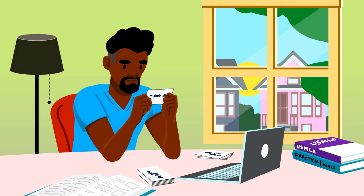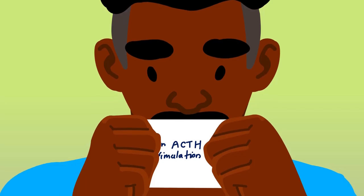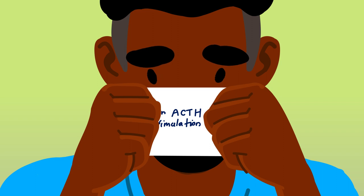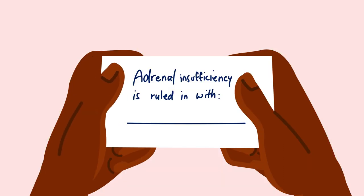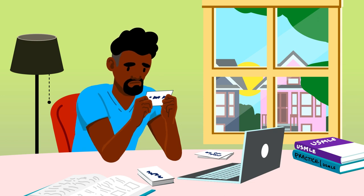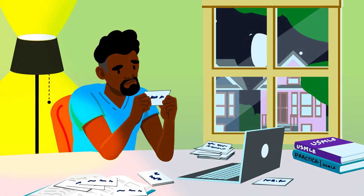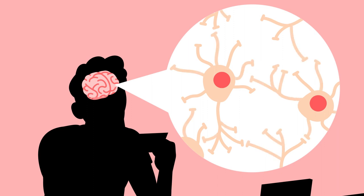You are studying for your board exams and have created flashcards to help. On one side, you have a prompt. On the flip side, the answer. You test your knowledge. Adrenal insufficiency is ruled in with blank. The answer just doesn't come to you. You take a guess, flip over the card, and see you guessed wrong. But you keep at it, and over time, you answer more and more questions correctly. You can almost feel your neurons growing.